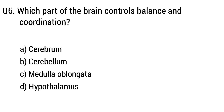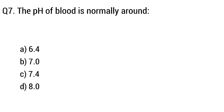Question 6. Which part of the brain controls balance and coordination? Option A: Cerebrum. B: Cerebellum. C: Medulla oblongata. D: Hypothalamus. The right answer is Option B: Cerebellum.